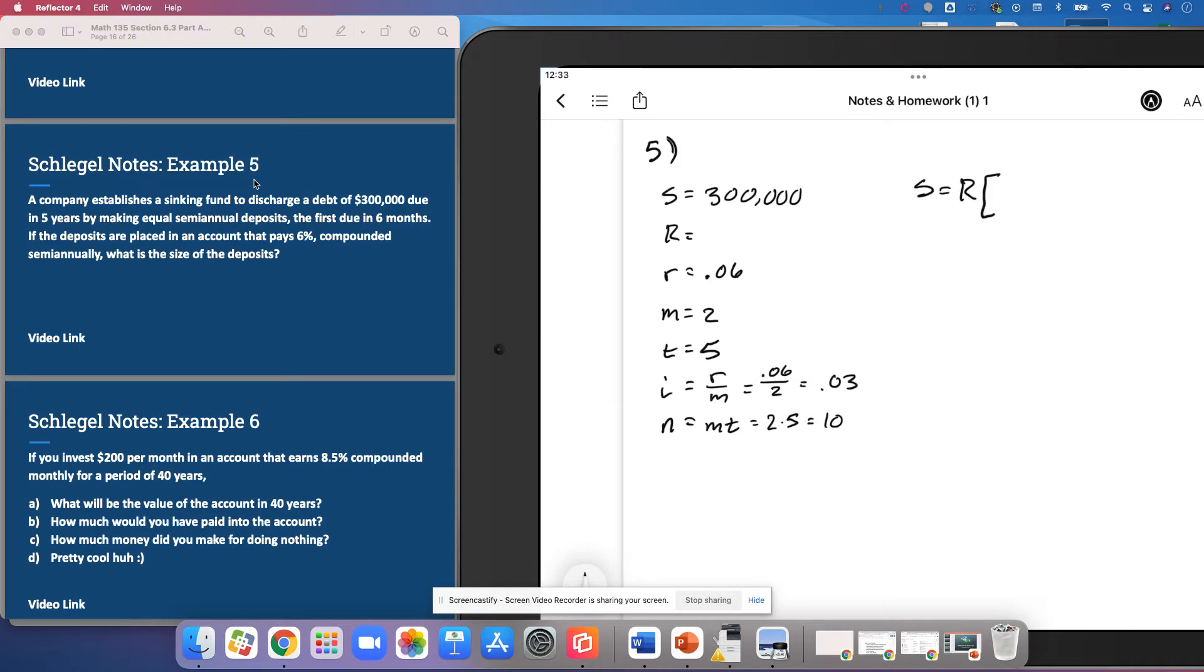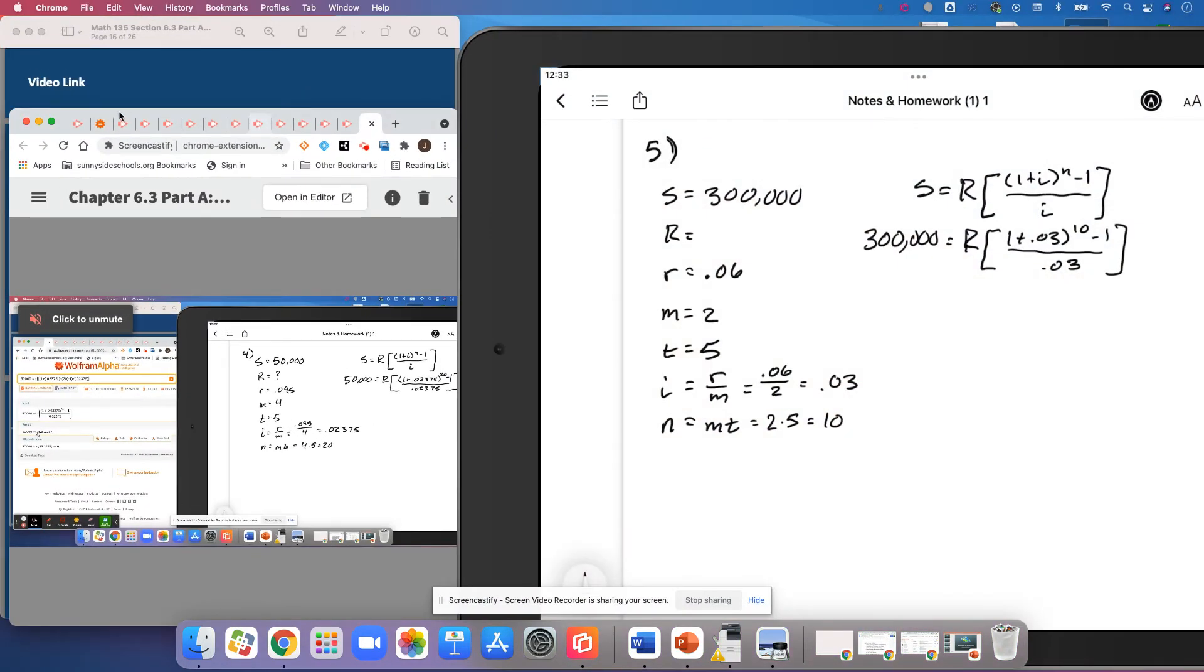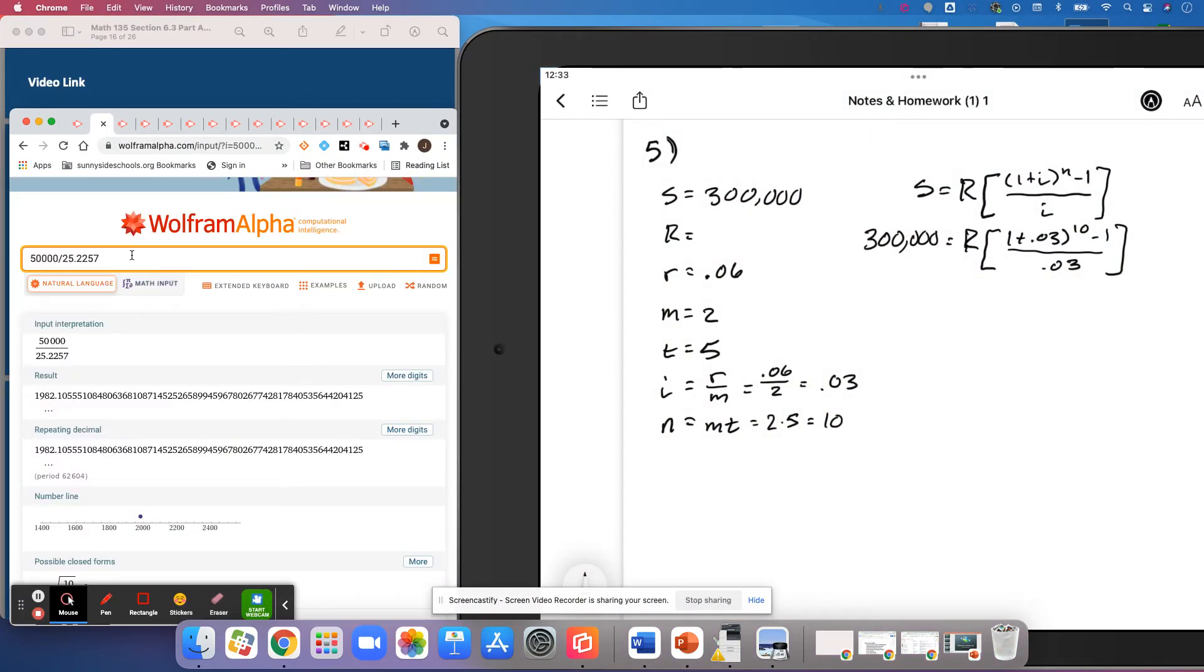This is an annuity. And so our S is $300,000. Our R is what we don't know, the size of the payment. 1 plus I is 0.03. N is 10. And I is 0.03. So given that to Wolfram everyone, we can figure out how much the size of the payments this company needs to make is going to be.